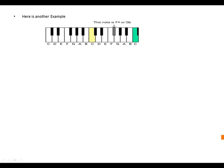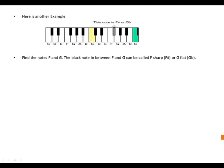Here's another example. Find the notes F and G. The black note in between F and G can be called F sharp or G flat.